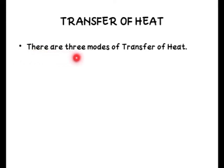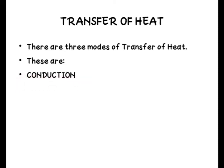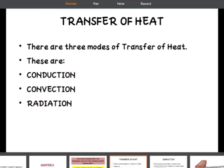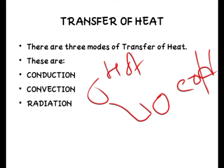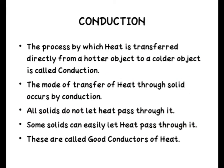Now let us discuss how heat transfers through a body. There are three modes of transfer of heat — that means heat can transfer from one body to another by three different ways. The first is conduction, the second is convection, and the third is radiation. If one object is hot and another is cold, heat will transfer from the hot body to the cold body by one of these three methods.